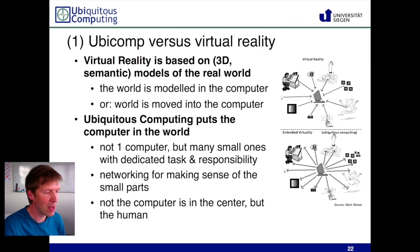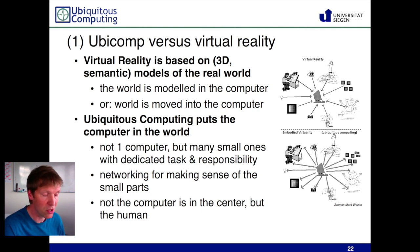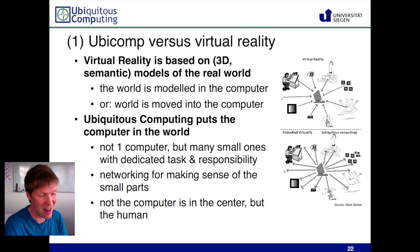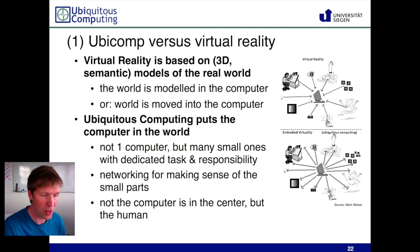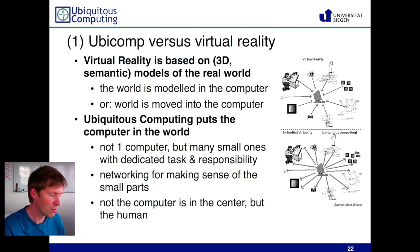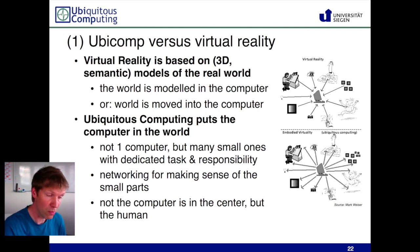He said that Ubiquitous Computing should be completely the opposite. Instead of putting the world into a computer, it should be about putting the computer into the world. And usually he was talking about multiple computers — not just one computer. In the 90s, you had one computer in your office that you would go to and do all your work at. In his vision, there should be multiple computers in your actual day-to-day life, doing certain tasks for you.